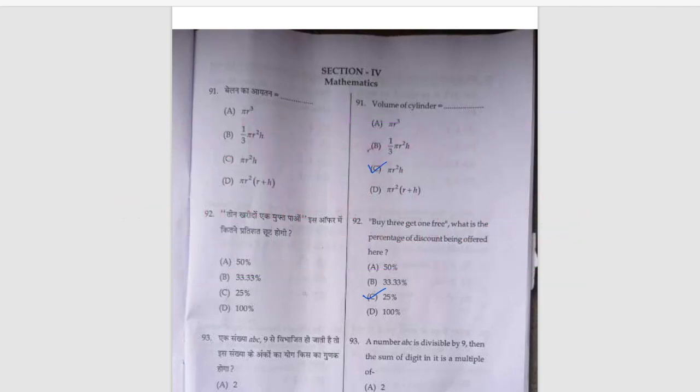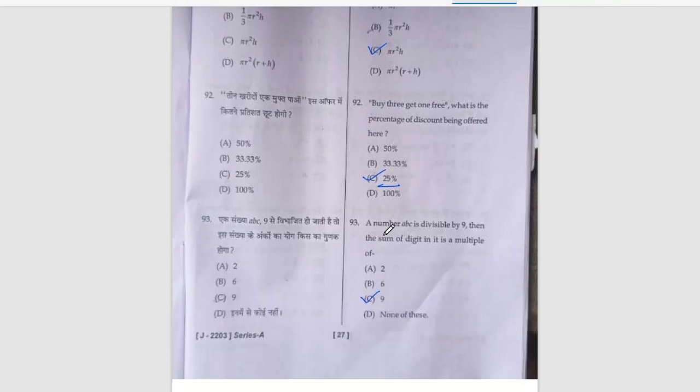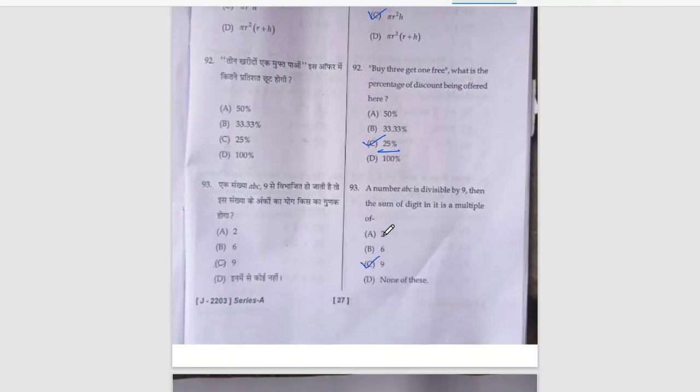Let's start with the answers. According to me, if you have any doubt or think there is another answer, you can comment. Next question: Y3 get 1 free, the answer is 25%. A number ABC is divisible by 9, then the sum of digits in it is a multiple of, obviously, 9.